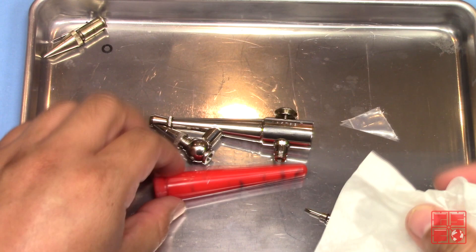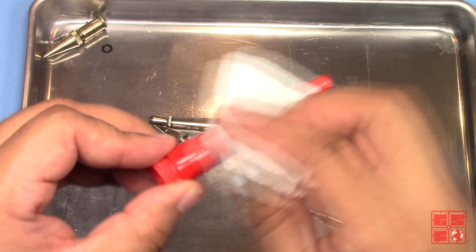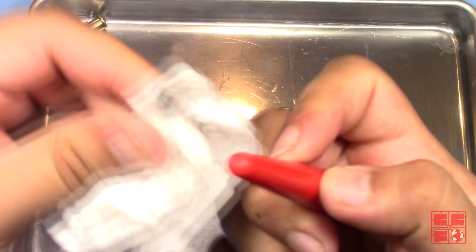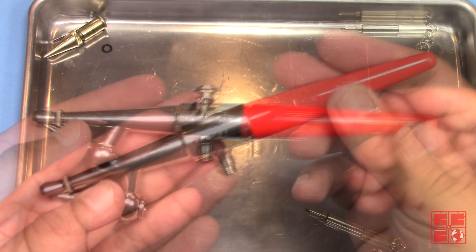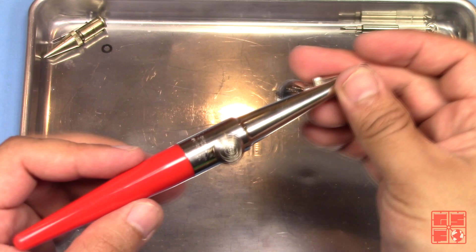Next, I wipe the handle using some rubbing alcohol and reinstall it on the airbrush. And that's it! The airbrush should work properly now.